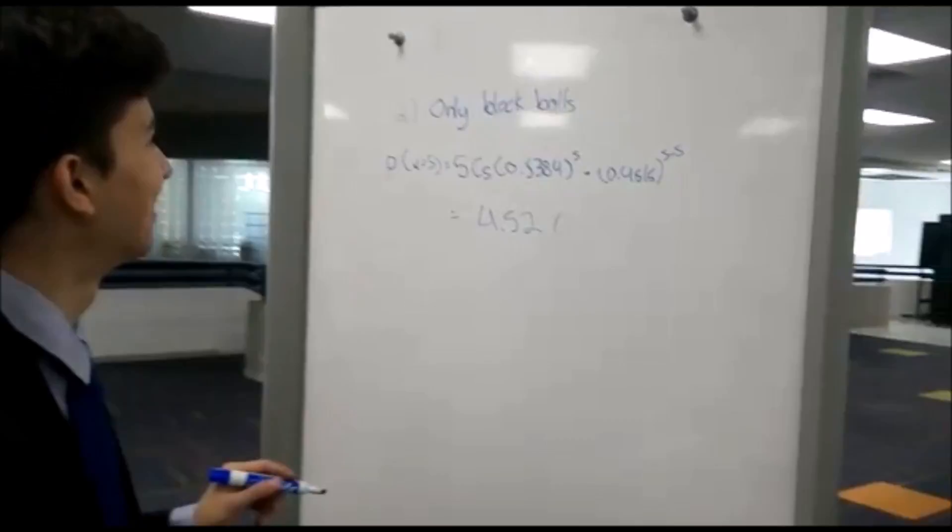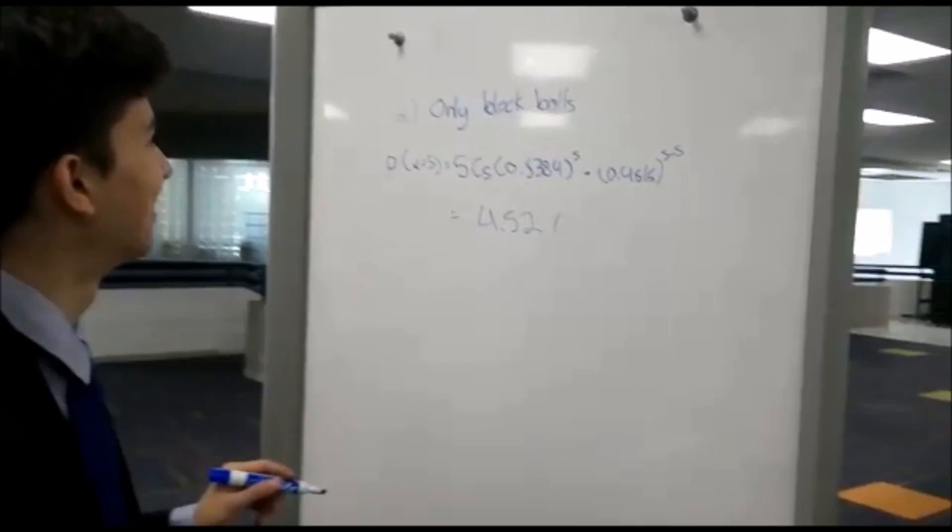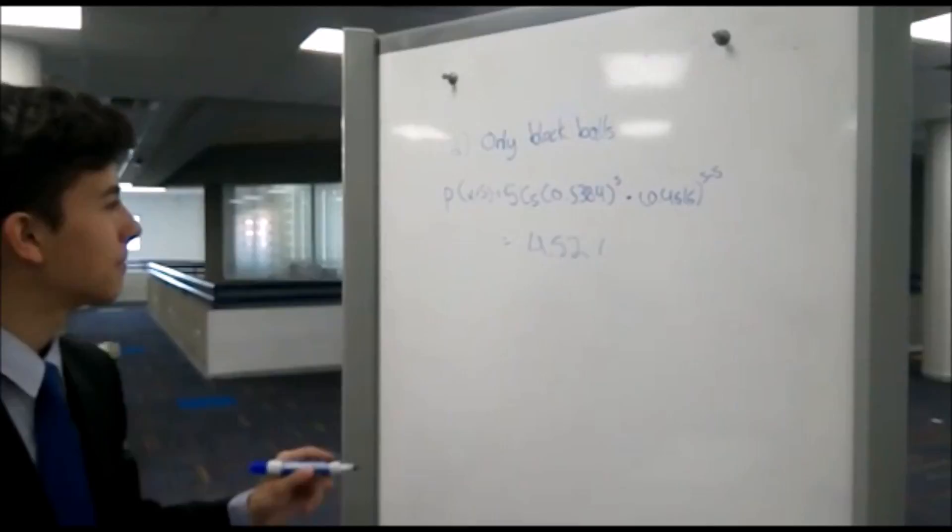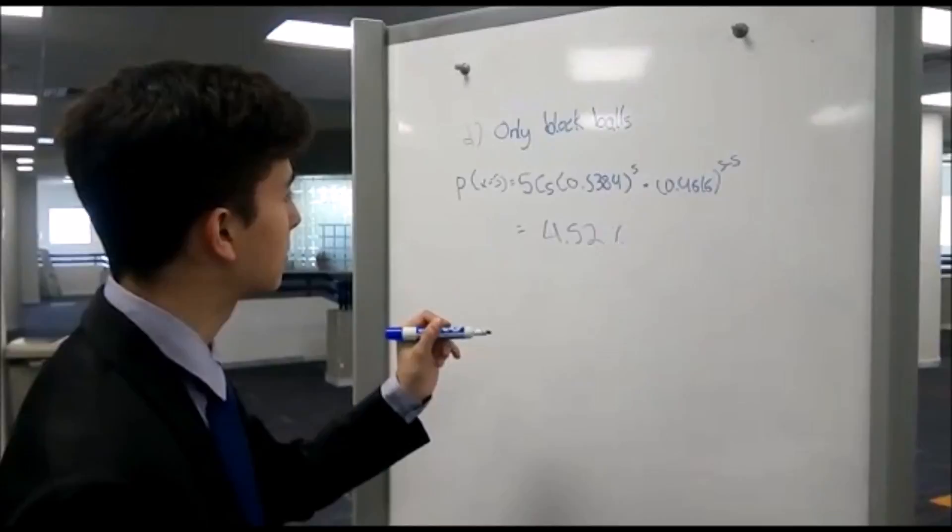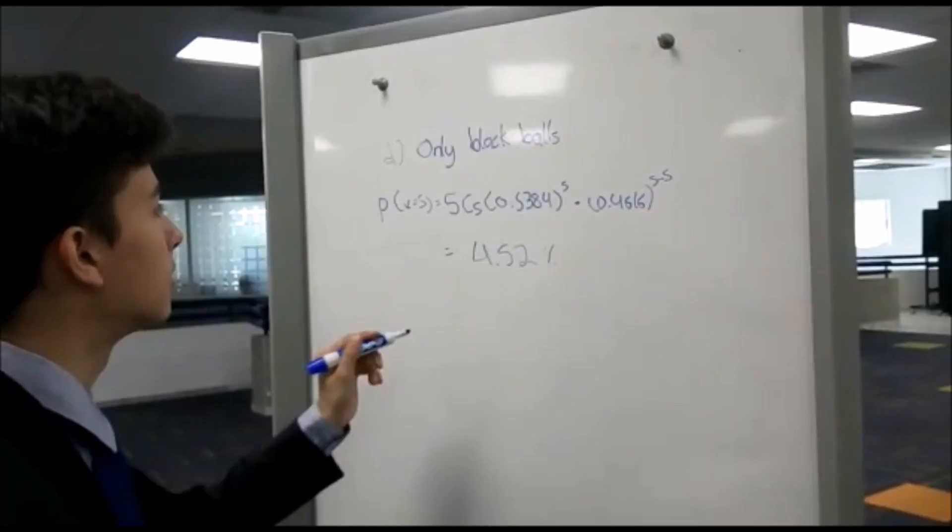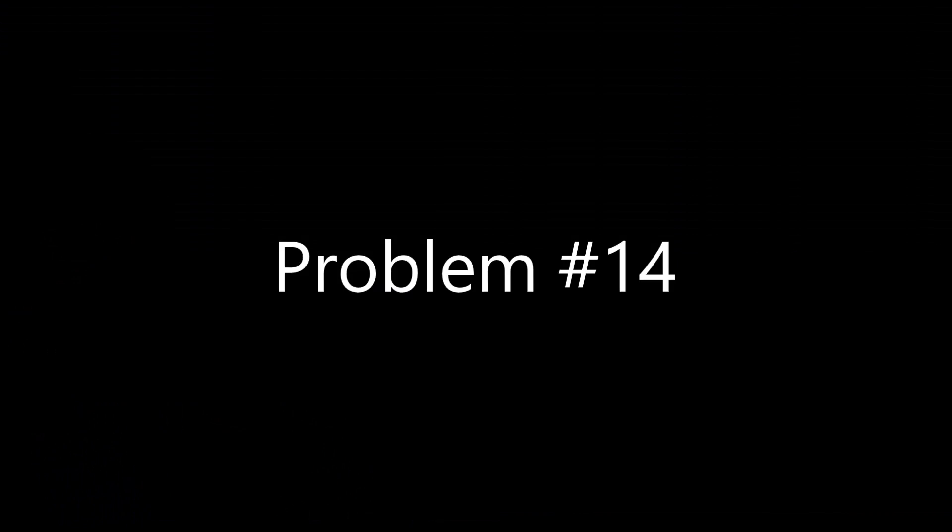So for the final problem, they're asking for only black marbles. In this case, since the number of trials is 5, the x will be 5. 5 out of 5 trials, there will only be black marbles. So you substitute the values, and the final answer will be 4.52%.